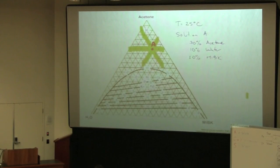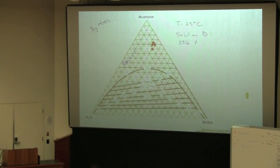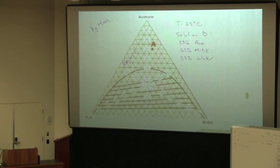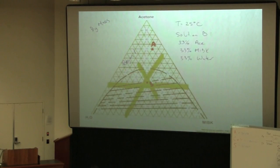Now consider Solution B: 33% acetone, 33% MIBK, and 33% water — equal mass ratio of all three species. This falls dead center of the triangle, inside the two-phase envelope. The lines inside the envelope are tie lines — they connect compositions in the two liquid phases at equilibrium. Following the tie line, we get one side as the water-rich phase and the other as the MIBK-rich phase. For the MIBK-rich phase: about 53% MIBK and about 38 weight percent acetone. For the water-rich phase: about 67% water and about 28 weight percent acetone, leaving 5 weight percent MIBK.